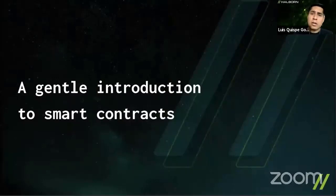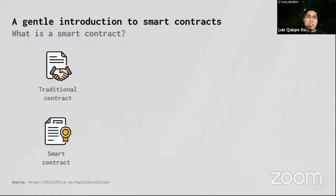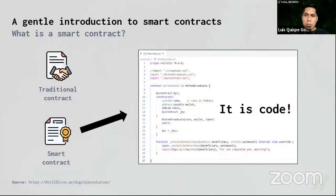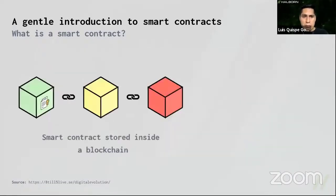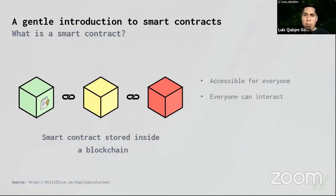Now let's talk about smart contracts. We can compare a smart contract with a traditional contract — they both have terms and conditions. The big difference is that a smart contract is digitalized, so the terms and conditions are expressed in code. When you store that compiled code in a blockchain, that's what we call a smart contract. Because it's inside the blockchain, it's accessible to everyone, and everyone can interact with the contract depending on their authorization level. There is also consensus about the outcome of the smart contract.